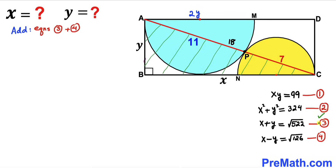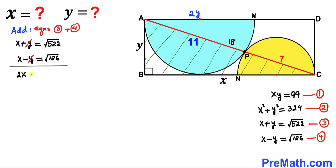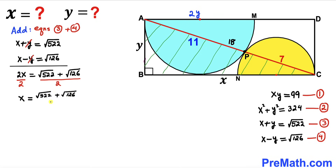Adding equations three and four eliminates y. The positive y and negative y cancel, leaving 2x = √522 + √126. Dividing both sides by 2, x = (√522 + √126) / 2, which simplifies to approximately 17.04.